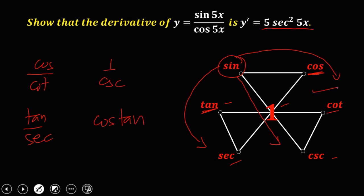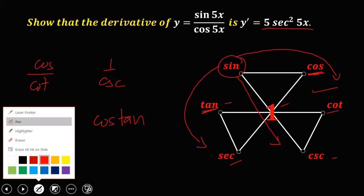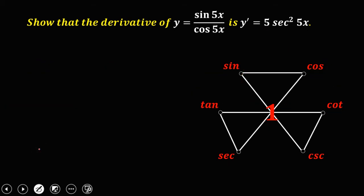In the given problem, we need to find the identity of sine 5x over cosine 5x. Since sine over cosine equals tangent, therefore y is now equal to tangent 5x.